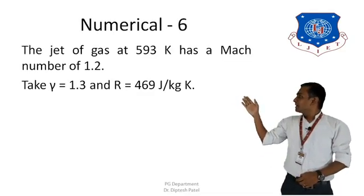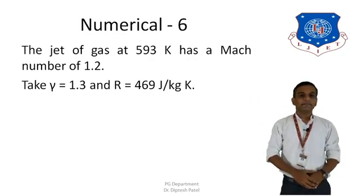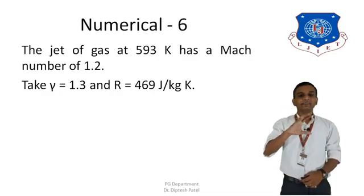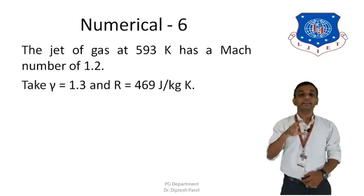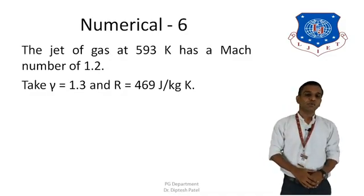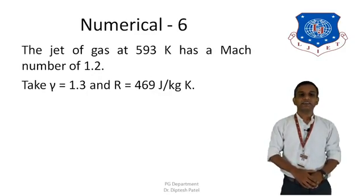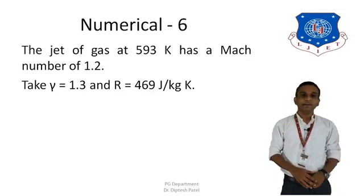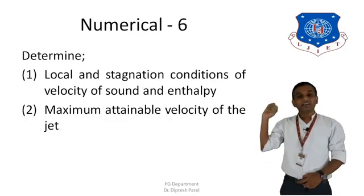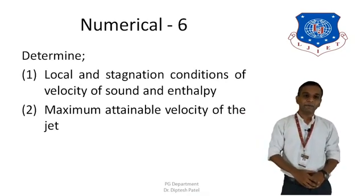The numerical states: a jet of gas at 593 Kelvin has a Mach number of 1.2. Gamma is taken as 1.3 and the characteristic gas constant R is taken as 469 joule per kilogram Kelvin. On the basis of this data, we need to calculate the local and stagnation conditions of velocity of sound and enthalpy, as well as the maximum attainable velocity of the jet.